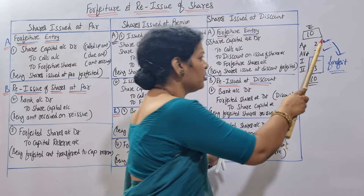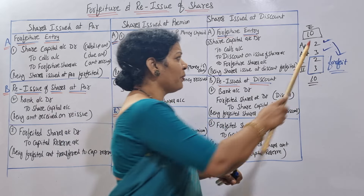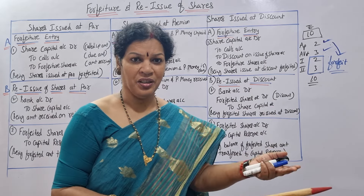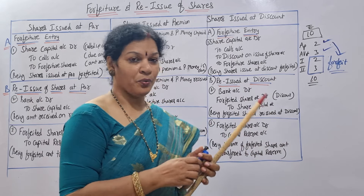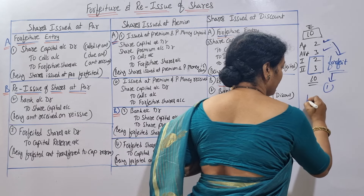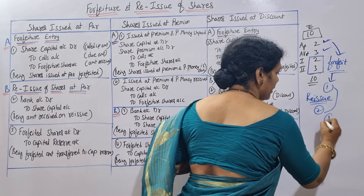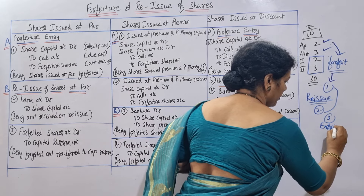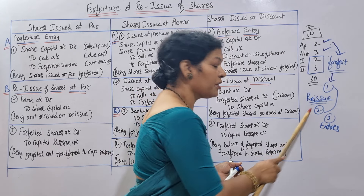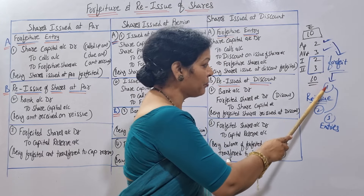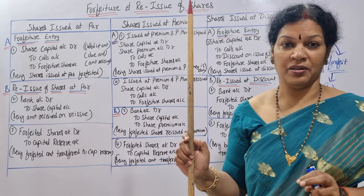The company can forfeit this 5 rupees - they can keep the amount. Simply keeping is not useful, so this 5 rupees they can reissue the shares to general shareholders. For forfeiting: one entry. For reissue: two entries. Total three entries we are going to learn. I have clearly prepared a table - three stages: forfeiture entry and reissue entries.